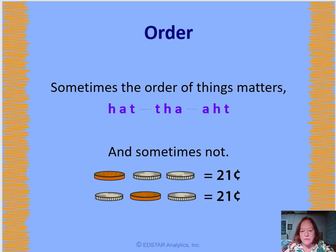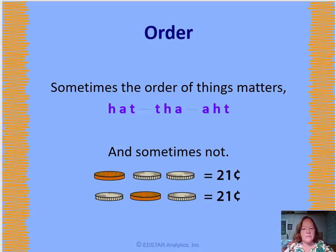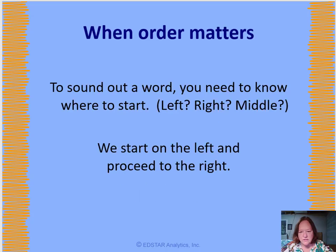But if you had two dimes and a penny and you rearranged them — from penny, dime, dime to putting the penny in the middle — the order doesn't matter. It's 21 cents no matter what. So that idea of when does the order matter is one of the ideas of place value.